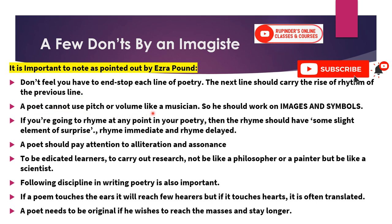A poet cannot use pitch or volume like a musician, which is why poetry is simpler than music. A poet's words will work like pitch and tone. He should work on images and symbols. For example, Wilfred Owen's poem 'Anthem for Doomed Youth' makes sounds feel as though the sounds of dying soldiers are banging into our ears — that is the glory of a great poet.